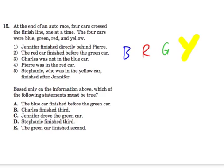So we're given a bunch of facts about the race, about who finished where, and we're given names and colors of cars.